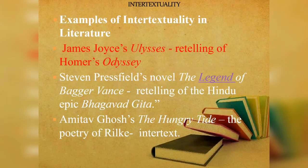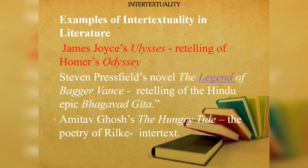There are further examples of intertextuality in literature. James Joyce's Ulysses is a retelling of Homer's Odyssey. And Stephen Pressfield's novel The Legend of Bagger Vance is a retelling of the Hindu epic Bhagavad Gita. And Amitav Ghosh's novel The Hungry Tide consists of intertext from the poetry of Rilke continuously in consequent chapters.